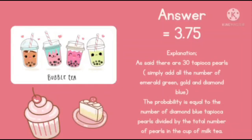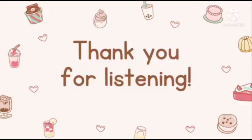The probability equals 8 over 30. Explanation: As stated, there are 30 tapioca pearls. Simply add all the numbers of emerald green, gold, and diamond blue. The probability equals the number of diamond blue tapioca pearls divided by the total number of pearls in the cup of milk tea. Thank you for listening. God bless.